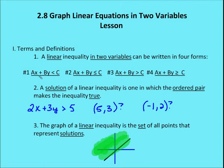Don't be intimidated by the A's, B's, X's, Y's, and C's — they're all just placeholders for different values. The four forms are: AX plus BY is less than C; AX plus BY is less than or equal to C; AX plus BY is greater than C; and AX plus BY is greater than or equal to C. A solution of a linear inequality is an ordered pair that makes the inequality true.